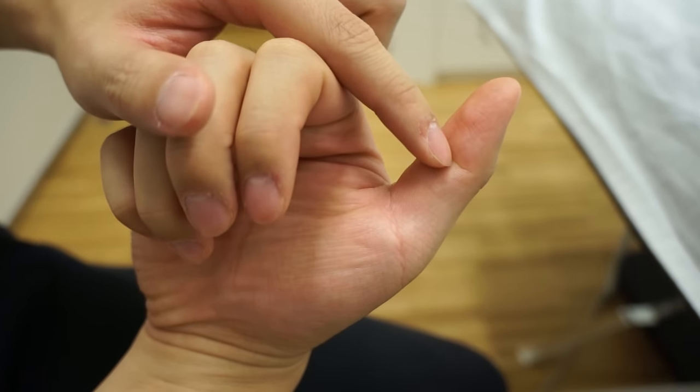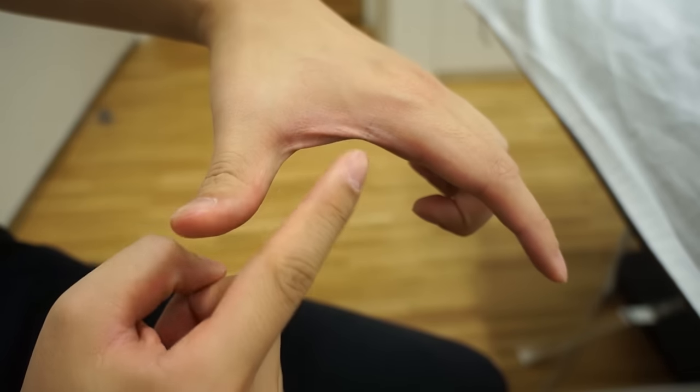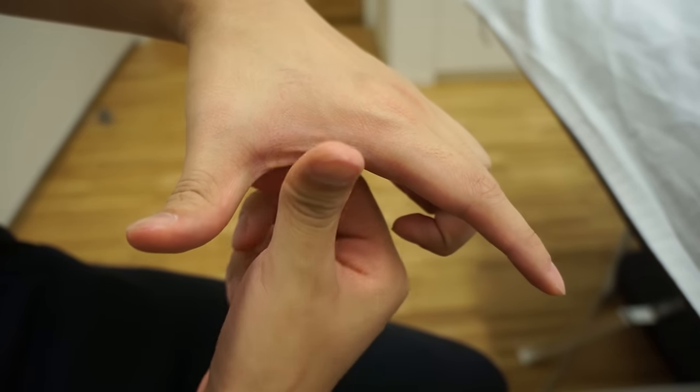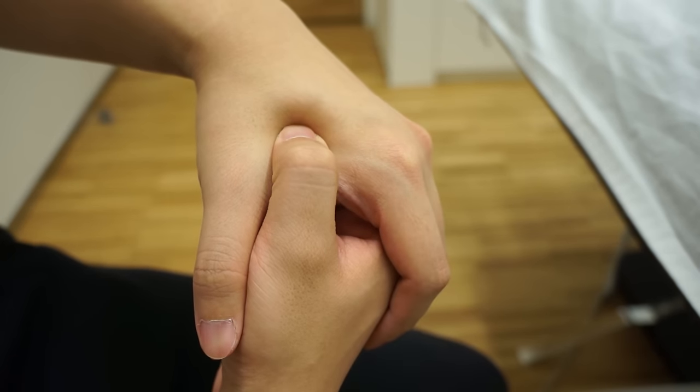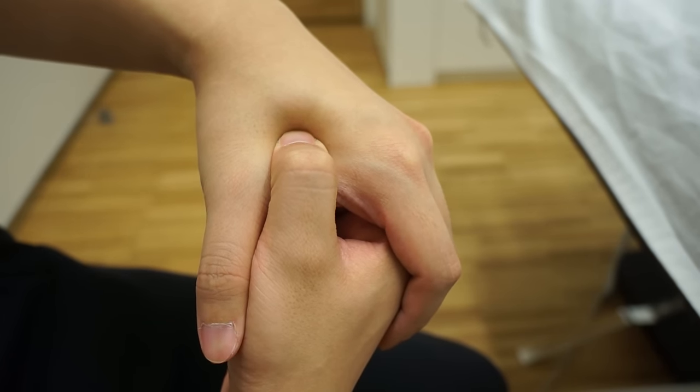To find this acupressure point, you want to take the first joint of the thumb and place it on the web of the hand. The tip of the thumb will land directly on the acupressure point.